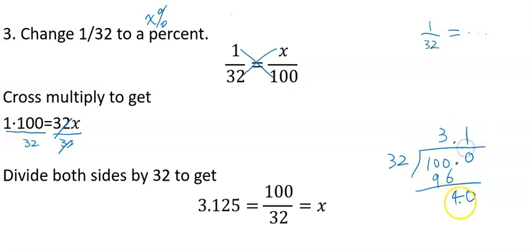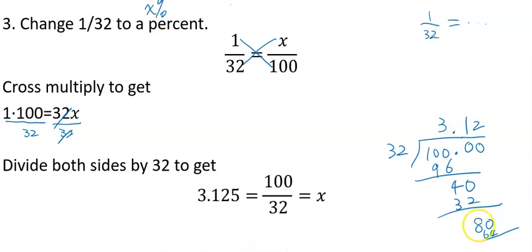32 goes into 40 one time. Subtract to get 8, and add another 0. 32 goes into 80 two times, which is 64, leaving us 16.